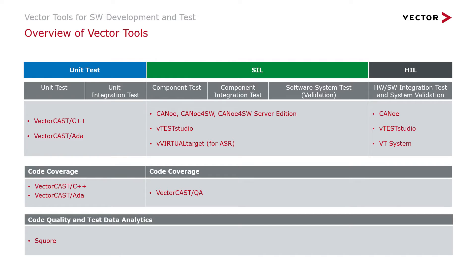SCORE is Vector's code quality and test data analytics tool. It is a data aggregator that can aggregate data from all the testing tools, as well as almost any other tool — static analysis, requirements, and architecture tools. You can set up key performance indicators (KPIs) that you want to measure against, and SCORE will take all that data and measure your code against those KPIs.